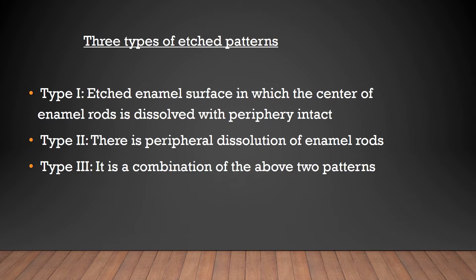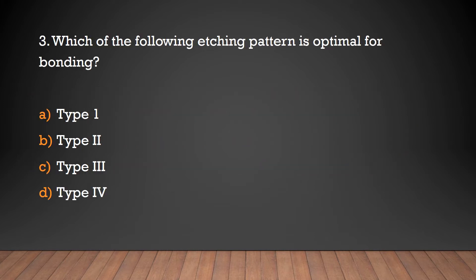There are three types of etched patterns. In Type 1, center of enamel rods is dissolved with intact periphery. In Type 2, there is peripheral dissolution of enamel rods. Type 3 is a combination of above two patterns. Which of the following etching pattern is optimal for bonding?